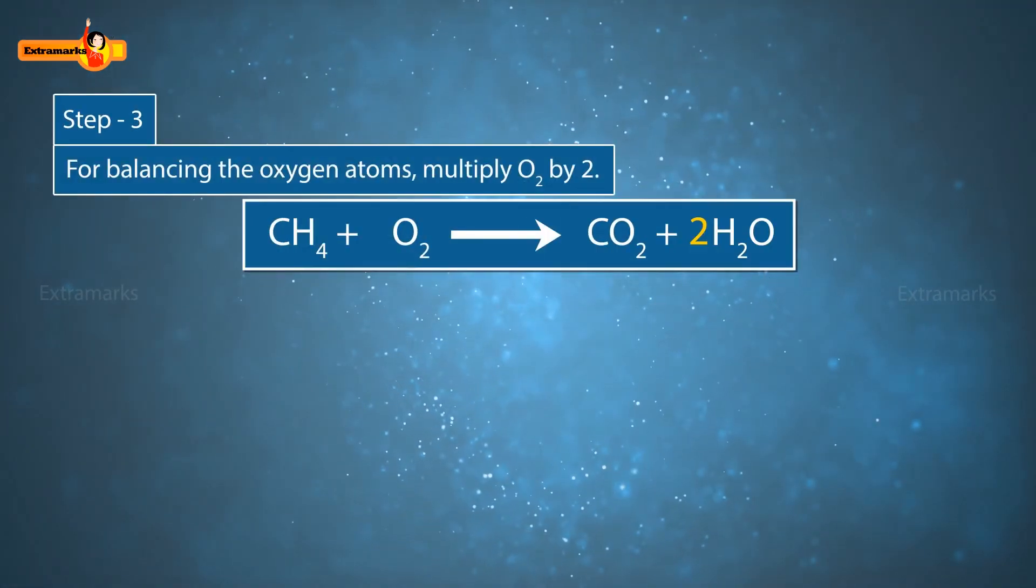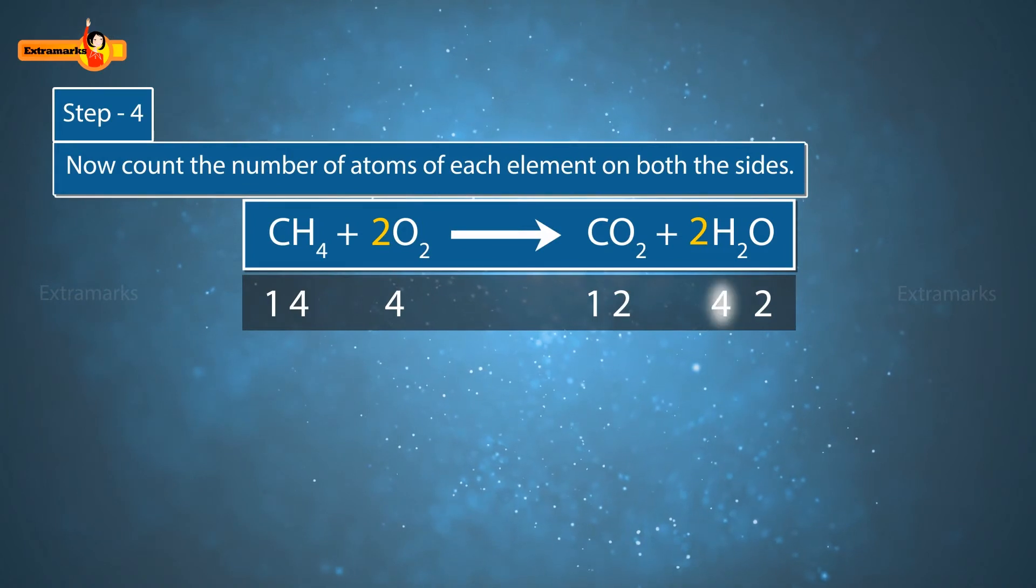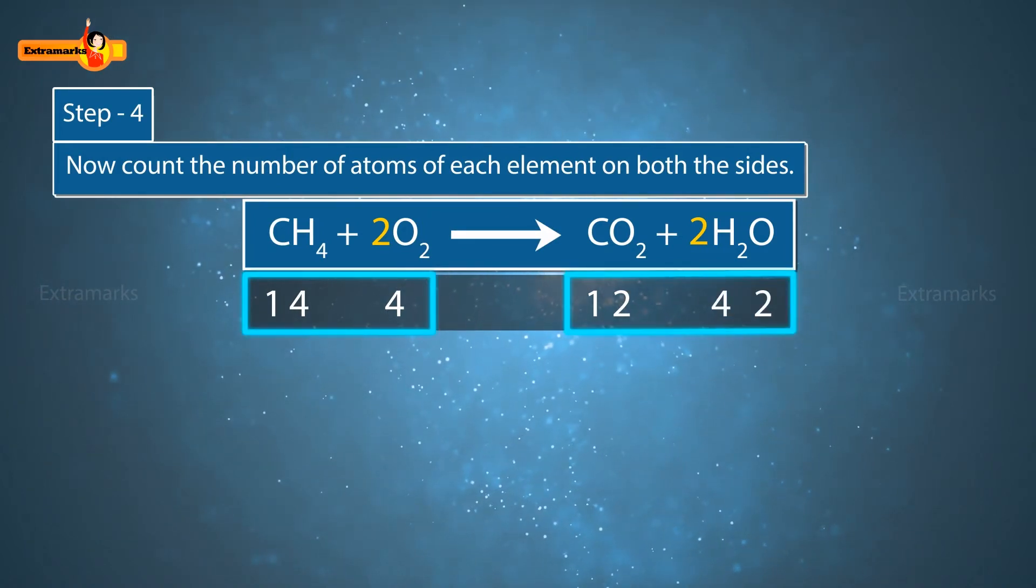For balancing oxygen atoms, multiply O2 by 2. Now, count the number of atoms of each element on both the sides. This time, all the atoms on the reactant and the product side are balanced.